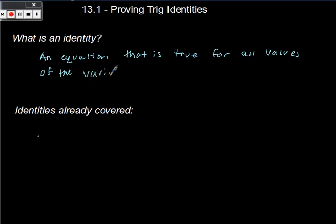We've actually already been using our identities this year. So far in 12.5, we talked about addition and subtraction angle formulas. And then 12.6, we talked about double angle formulas. So these are all identities. They are things that we all know to be true. We actually went through and proved the sine addition formula.